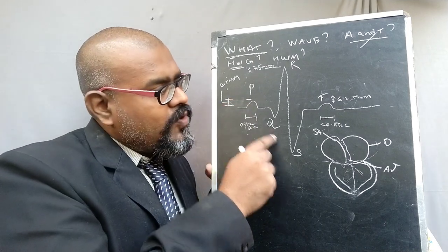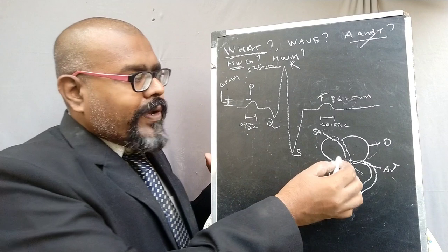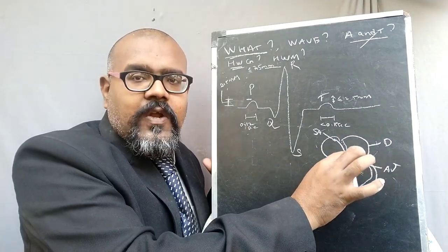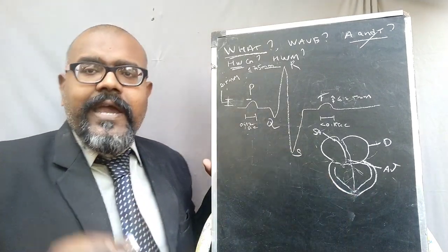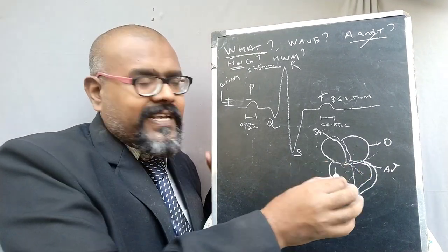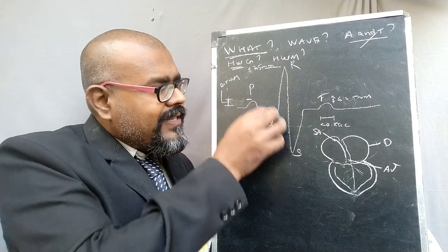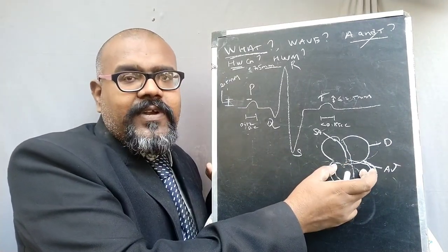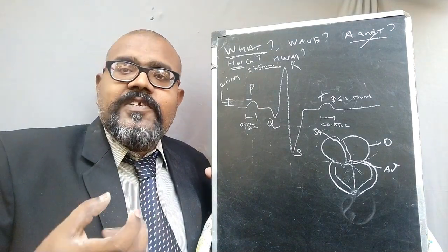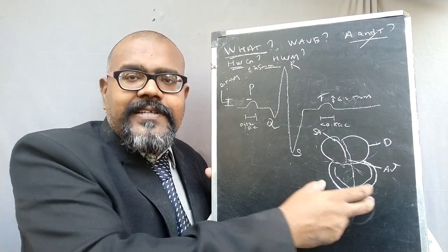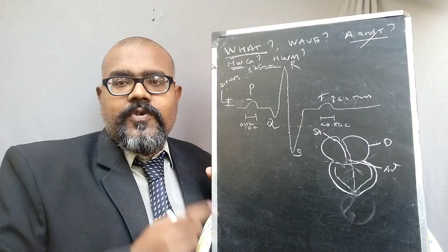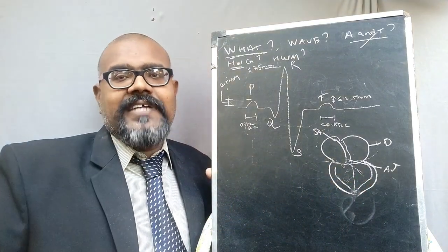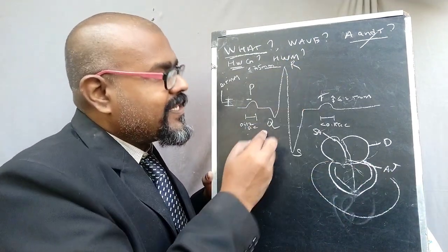After P, the QRS complex is generated. Once the atrioventricular node receives the pulses from the sinoatrial node and the auricles contract, the pulses need to transfer to the ventricles. In the initial fraction of a second before reaching the ventricles, the cell membrane potential slows down, producing a negative deflection. Once the pulses fully reach the ventricles — whose walls are thicker and generate higher pressure — the cells get more excited than the auricles. This greater depolarization of the ventricles generates the QRS complex.